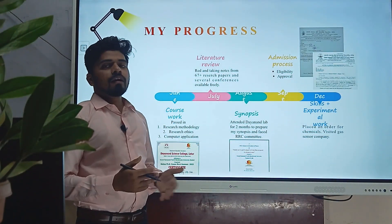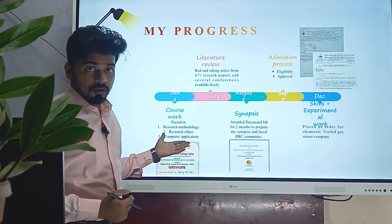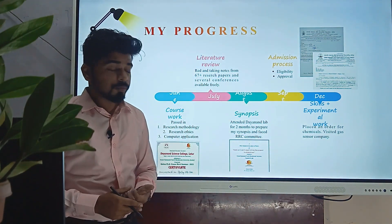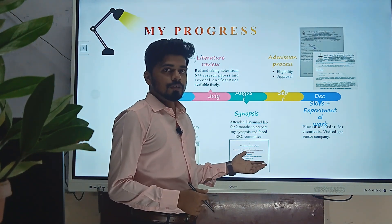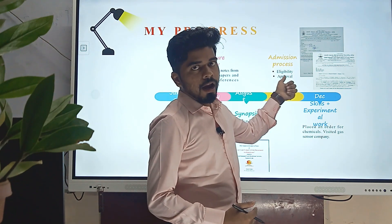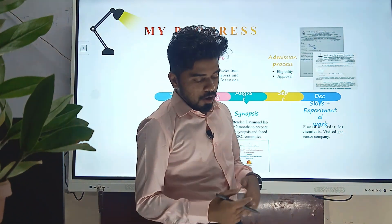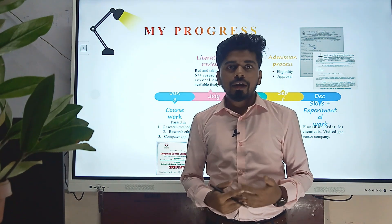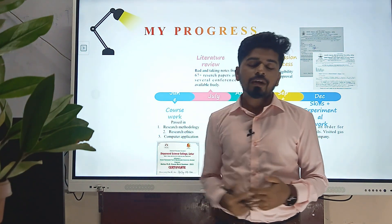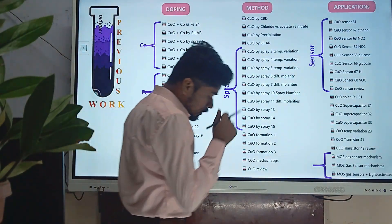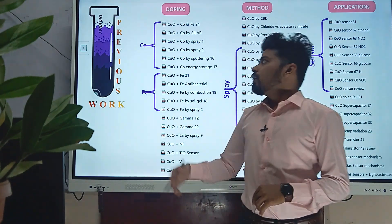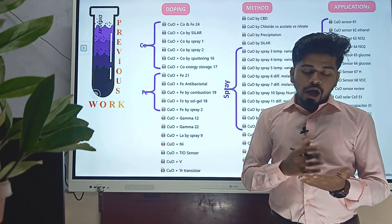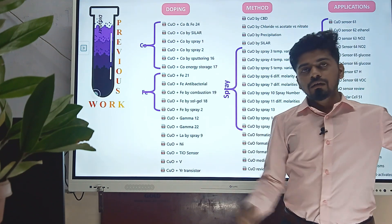This is my progress over the last 5 to 6 months. In June and July, I completed coursework in 3 subjects and obtained certificates. In July, I did a literature review of around 67 research papers. In August, I prepared a synopsis and faced the RRC meeting. In September, I completed my admission procedure. In December, I developed research skills like digital drawing and data representation, which are reflected in my slides. I collected all research papers, made my own database, and classified them into 3 forms: doping, method, and application.